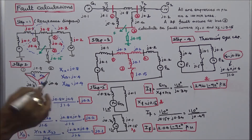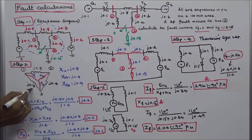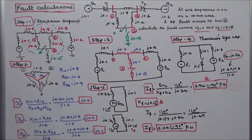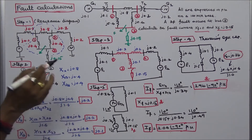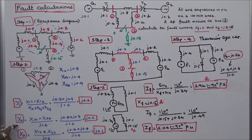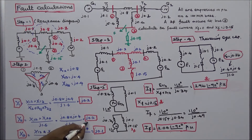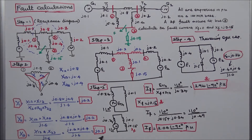We find the equivalent star reactances X1, X2, and X3. X1 equals J.8 × J.4 divided by (J.8 + J.4 + J.4), which equals J.8 × J.4 divided by J1.6, giving J.2. Similarly, X2 equals J.8 × J.4 divided by J1.6, giving J.2. X3 equals J.4 × J.4 divided by J1.6, giving J.1.